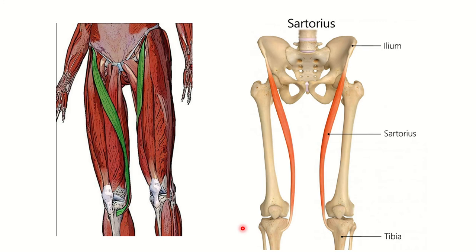Let's look at the sartorius muscle. In the second picture, we can see the sartorius muscle. It arises from the anterior superior iliac spine of the ilium and travels downwards through the anterior compartment, finally inserting into the upper part of the medial aspect of the tibia — along with the gracilis and semitendinosus. It is the longest muscle of our body.